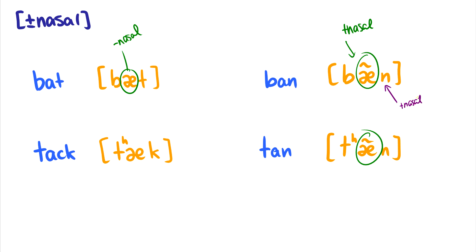You can imagine if we have a system, especially when we look at feature geometry later, and we say that oh this is a plus nasal sound, well what's probably happening here is that it's spreading its nasalness to the vowel. In fact when we do feature geometry that's exactly how we talk about this process.